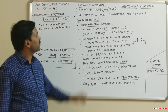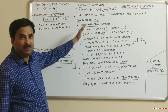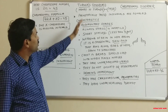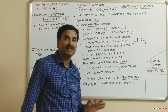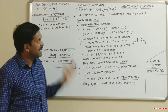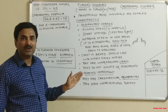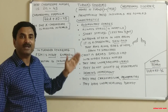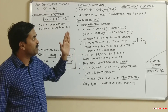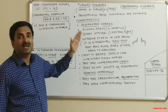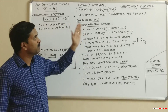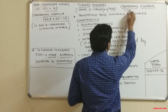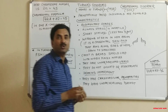Hello everyone. Today we are going to study about Turner syndrome. Turner syndrome was described by a scientist named Henry H. Turner in the year 1938. First of all, you must know whether Turner syndrome is an autosomal disorder or a chromosomal disorder — it is a sex chromosomal disorder.